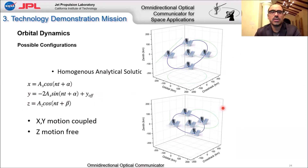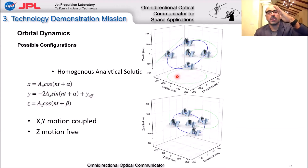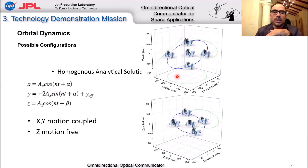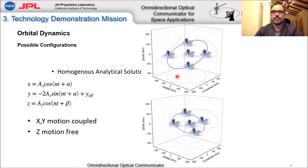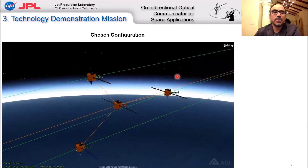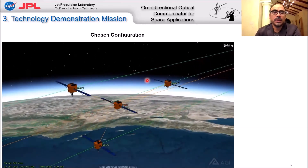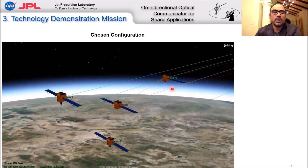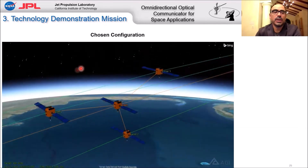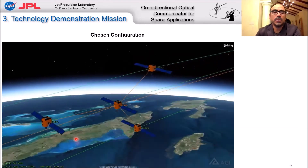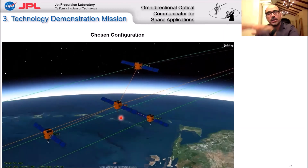Depending on the parameters you select, you can actually change the orbit configuration — it could be set up horizontal or perpendicular to the ground — and you can adjust the distance between the leader and the followers. This is an STK simulation showing the leader in the middle and the followers around it, rotating with respect to the leader as all four spacecraft orbit Earth.